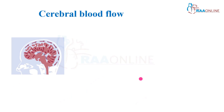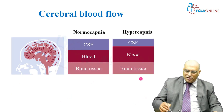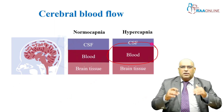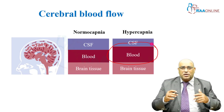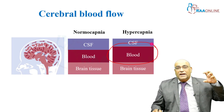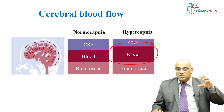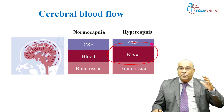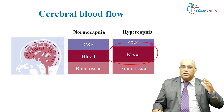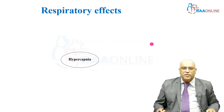Coming to cerebral blood flow, the cerebral blood flow increases. The blood component of the brain is increased with hypercarbia, which can increase intracranial pressure dramatically, and this becomes very important in the case of a CNS injury.